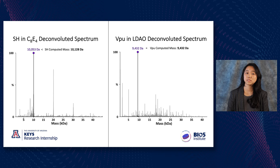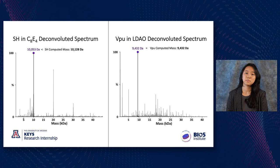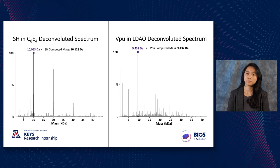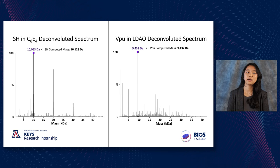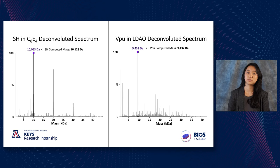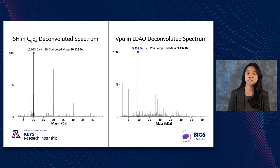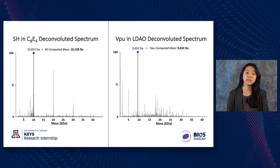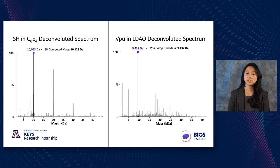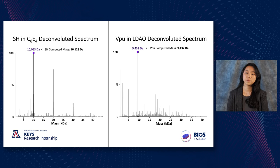Because mass spectrometry is ultra-sensitive, we can confirm if we've isolated our protein by seeing if the base peak mass equals the calculated target protein mass. Looking at the SH protein mass spectrum on the left, it has a base peak of 10,053 Daltons. However, we were looking for a mass of 10,128 Daltons, meaning we were unable to isolate our SH protein. This could be because the SH protein is incredibly small, so we most likely lost it during purification.